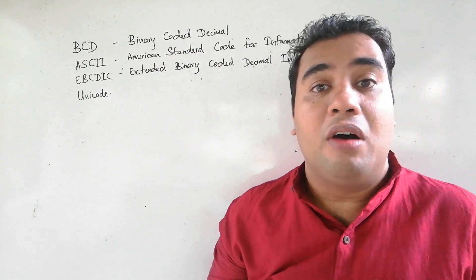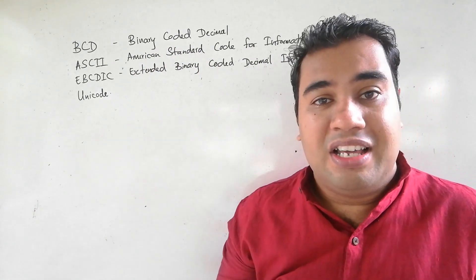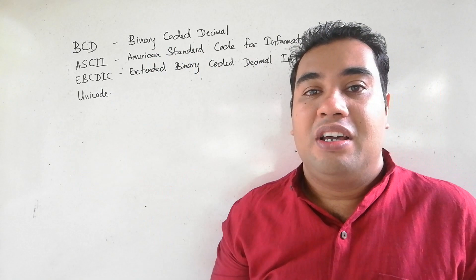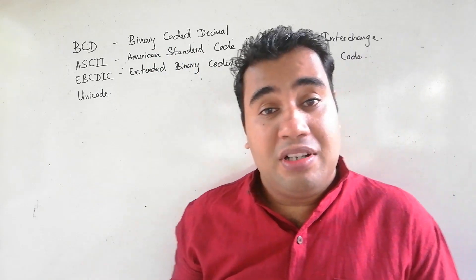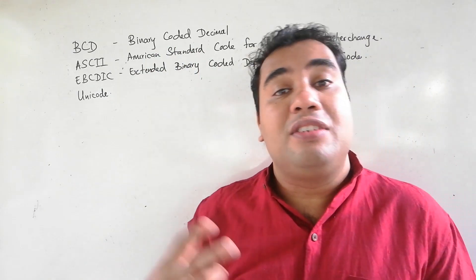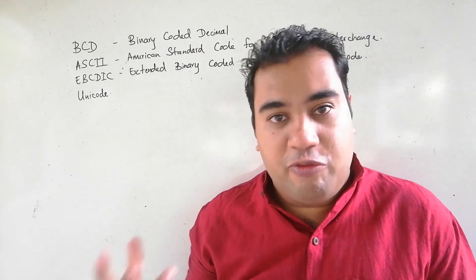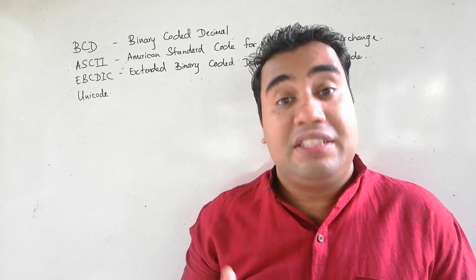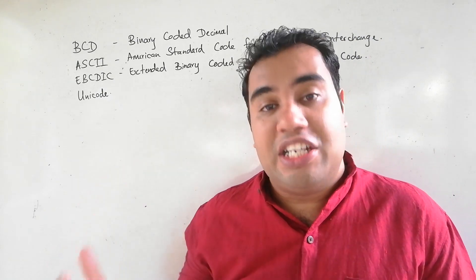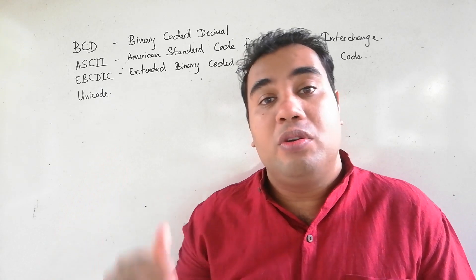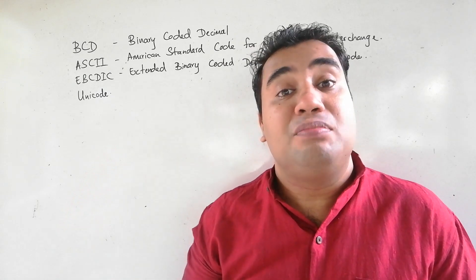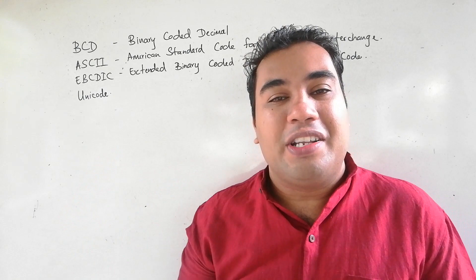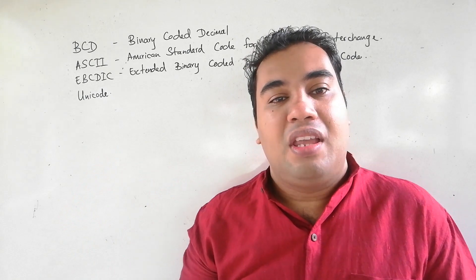These are the basic names of the four coding systems: BCD or Binary Coded Decimals, ASCII or American Standard Code for Information Interchange, EBCDIC or Extended Binary Coded Decimals Interchange Code, and last but not least, Unicode.